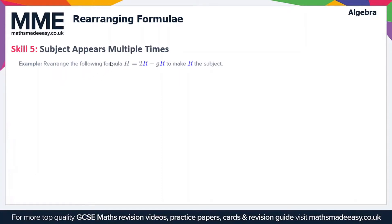Here we're going over one skill which is where the subject appears more than once in the equation. We have the formula h = 2R - gR and we want to get R as the subject, so we want R on its own on one side of the equation.